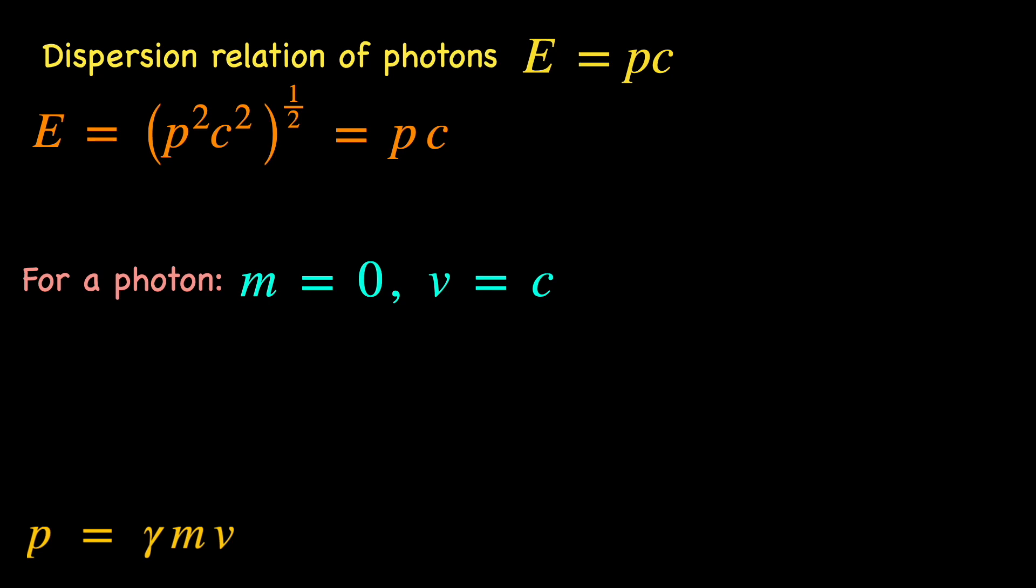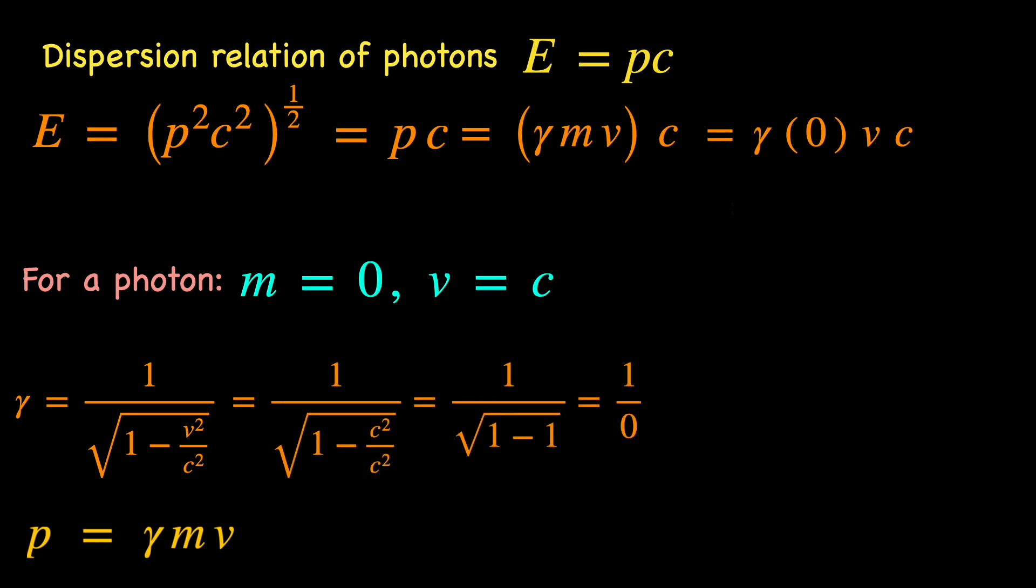p which is supposed to be gamma mv has m equals 0 in the numerator and gamma which is 1 upon the square root of 1 minus v upon c squared, for v equal to c makes the denominator 0 too.